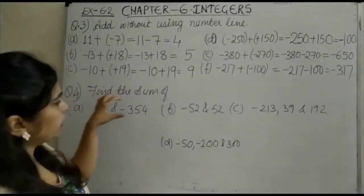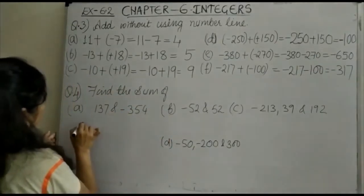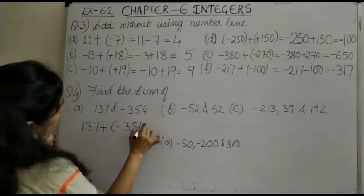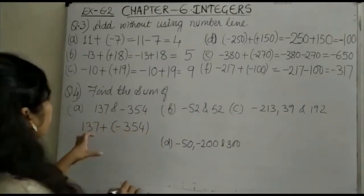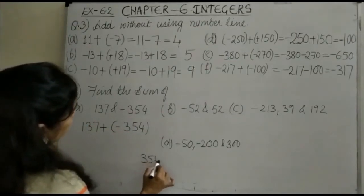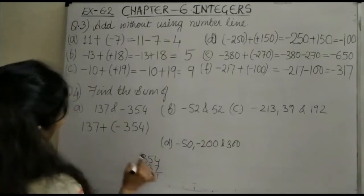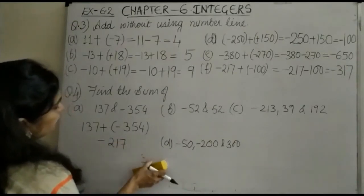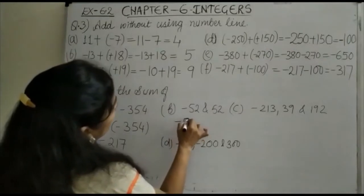Coming to the next section: find the sum. Here we have 137 + (-354). One term is positive and one is negative, so you subtract: 354 - 137 gives 217. The bigger number is 354, which is negative, so the answer is -217. Next, -52 + 52 gives you 0.